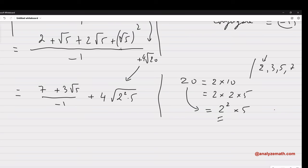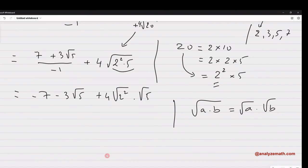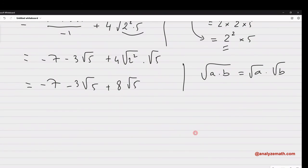I substitute 20 by this. Now, a minus 1 here gives me minus 7, minus 3 square root of 5, plus 4. Split this. Remember? Square root of A multiplied by B, give me square root of A multiplied by square root of B. So, square root of 2 squared, square root of 5, 7. Negative 7, minus 3 square root of 5, plus... Now, this is a perfect square. So, square root of 2 square is 2 by 4, 8, square root of 5.